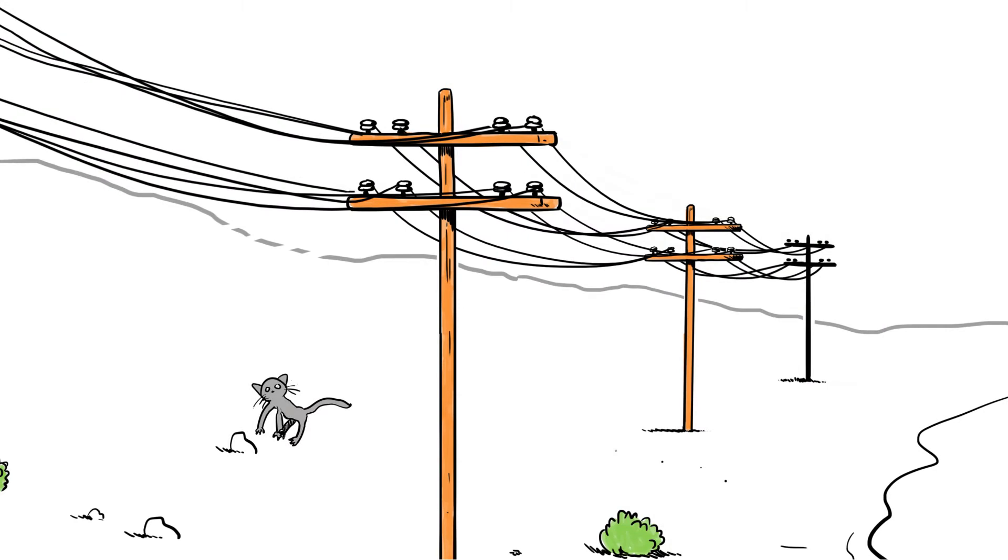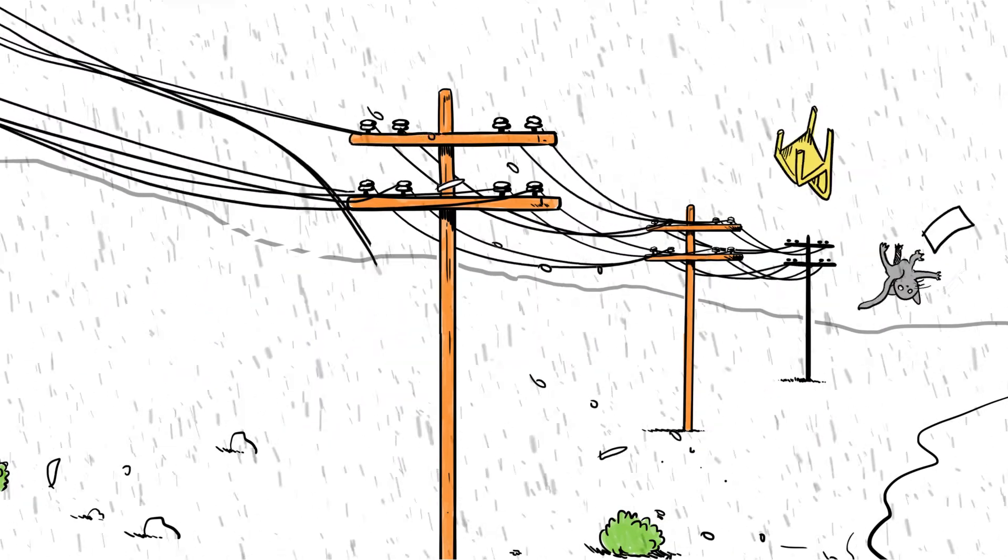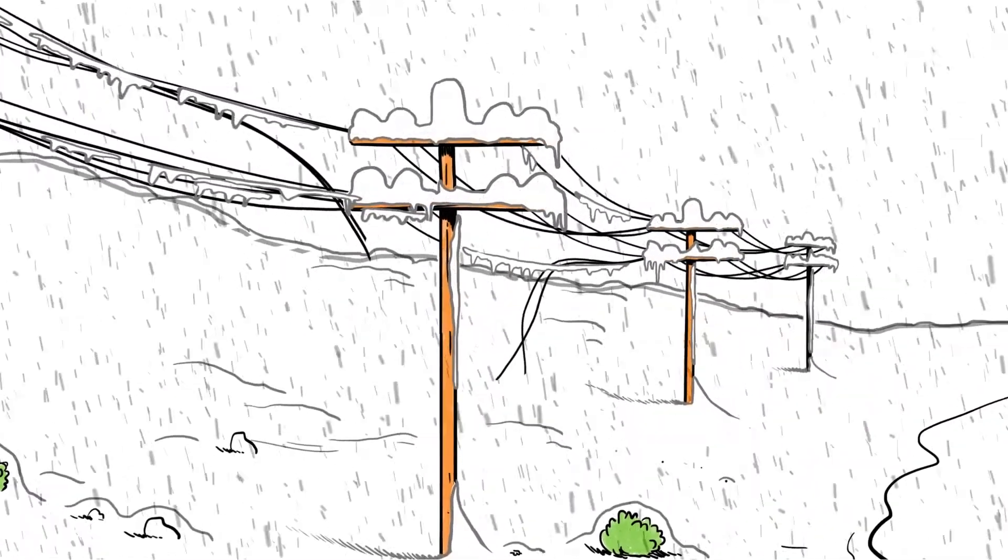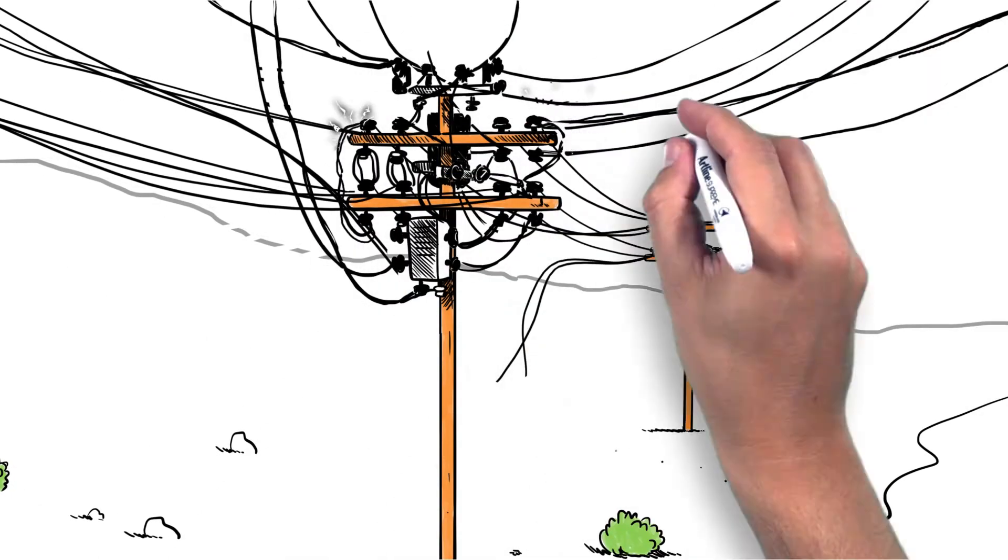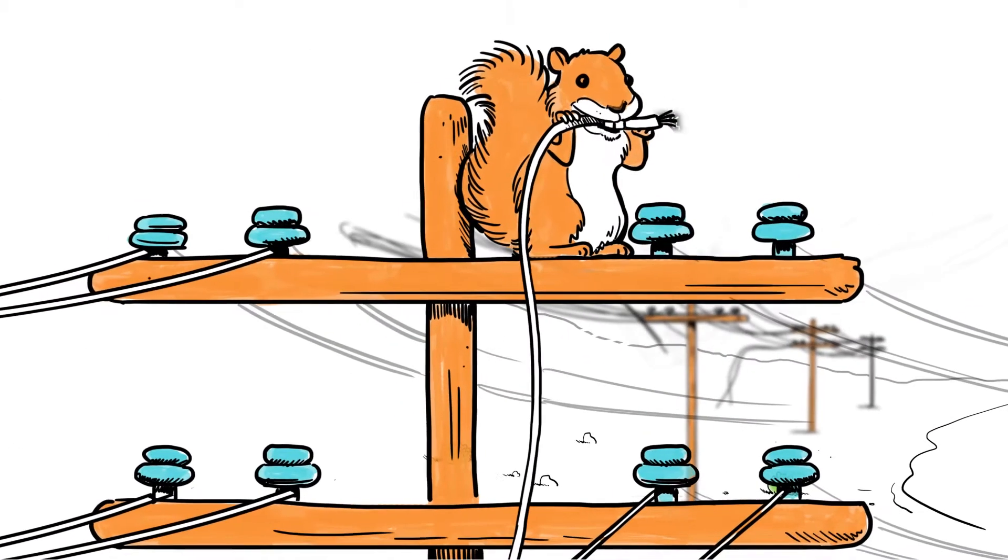Sometimes power outages are caused by bad weather like hurricanes, blizzards, and even earthquakes. Other times they're caused by excess demand on aging power grids, or even by hungry squirrels.